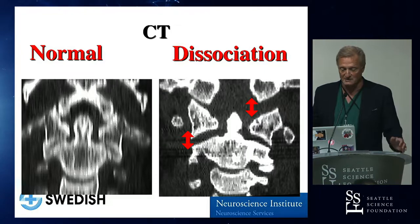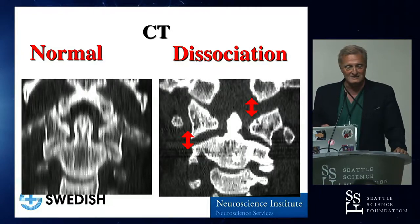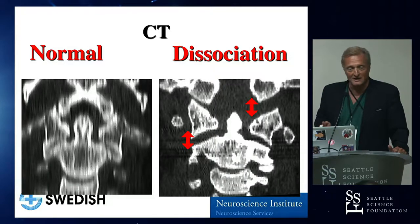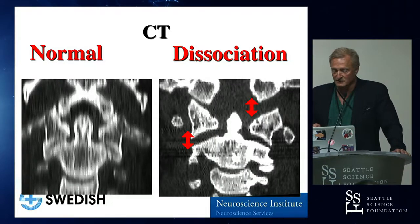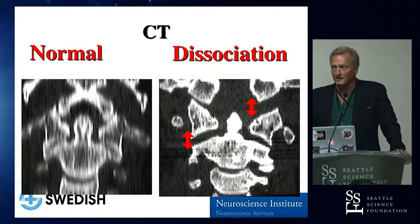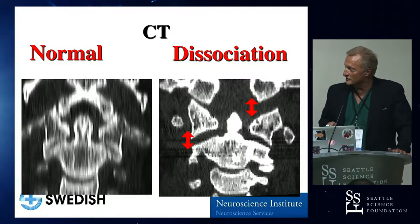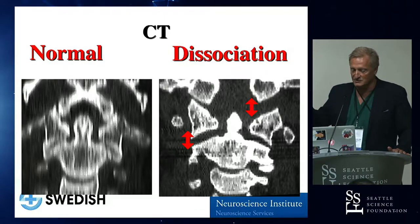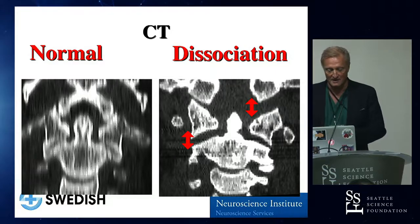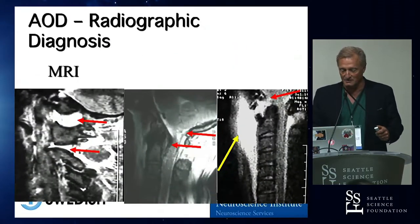Secondly, wherever you put the head, the spine will go — or the opposite way, it's dislocated. So the direction of displacement had little to do with the actual injury. These injuries are frequently complex cranio-cervical junction injuries. You can have injuries that dissociate at one level and at another level, and it's not that simple.